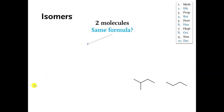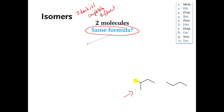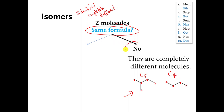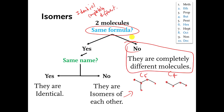As an example, I show you these two molecules and ask: are they isomers, identical, or completely different? First, do they have the same formula? This one is C5-something, and this one is C4-something. They don't even have the same formula, so the answer to the first question is no. These are completely different molecules — they can't be isomers and they can't be identical.